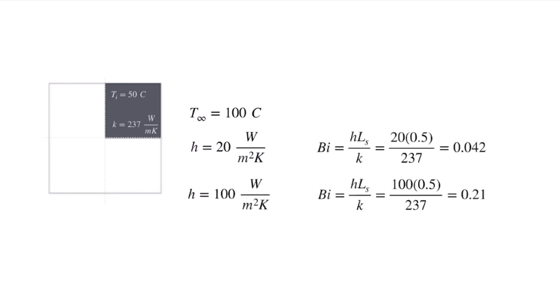I'm going to look at a second case where we increase the convection coefficient to 100. And when we increase the convection coefficient to 100, now that Biot number is going to go up by a factor of 5 to 0.21. 0.21, we'll see, is not low enough to use the lumped capacitance method effectively.